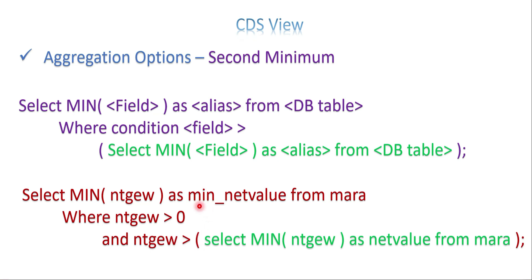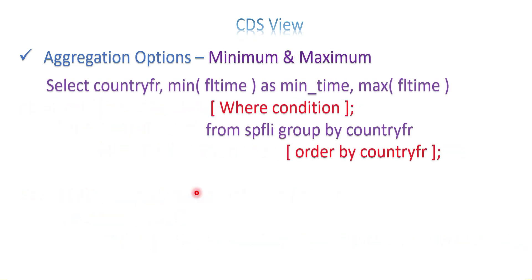The same logic applies for second maximum, but with a less-than condition: get the first maximum and add a WHERE condition that the value is less than that first maximum. This automatically returns the second maximum from the field. This is how you use a subquery to get second minimum or second maximum.